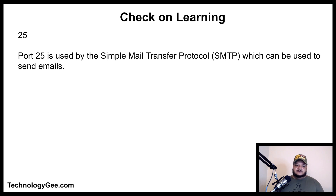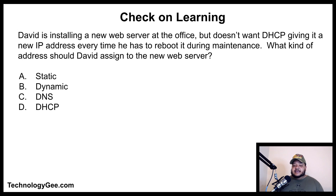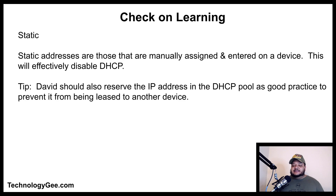Second question: David is installing a new web server at the office but doesn't want DHCP giving it a new IP address every time he reboots it during maintenance. What kind of address should David assign to the new web server — static, dynamic, DNS, or DHCP? The correct answer is static. Static addresses are manually assigned and entered on a device, which effectively disables DHCP. As a tip, David should also reserve the IP address in the DHCP pool to prevent it from being leased to another device.